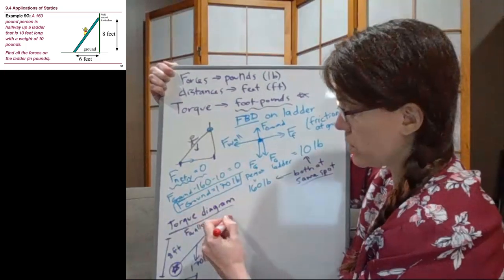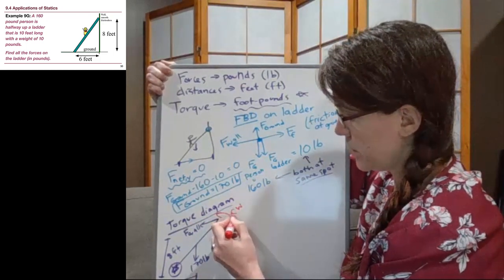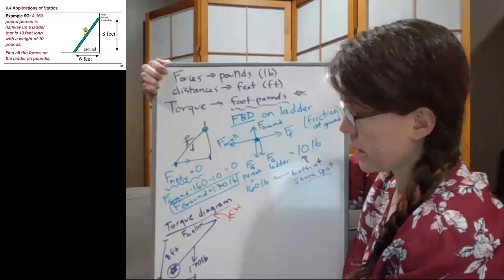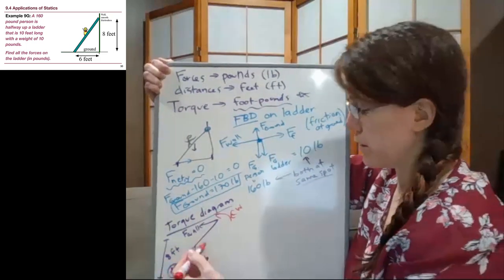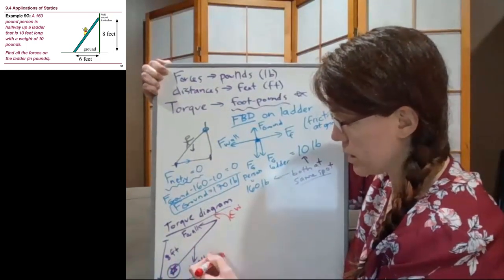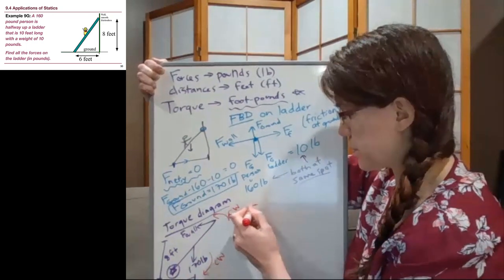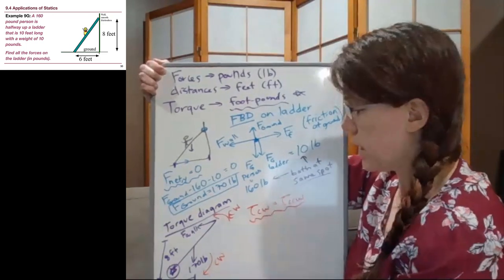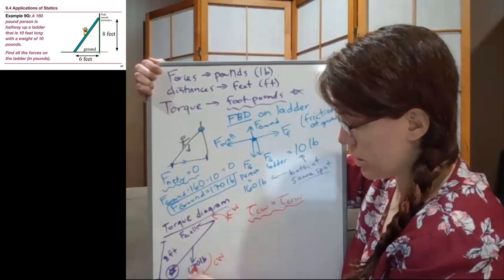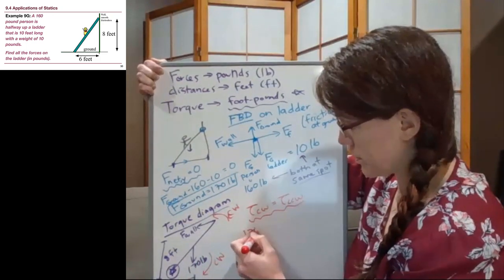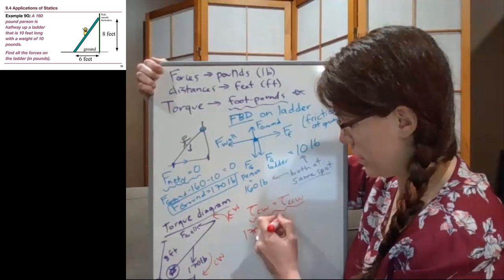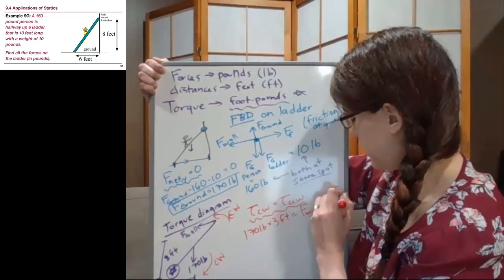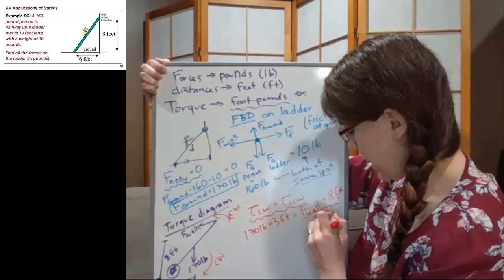For the torques, if somehow the wall were able to push extra, it would cause that ladder to go in a counterclockwise direction as it swings away from the wall. If the wall suddenly magically disappeared, this whole ladder would rotate clockwise, so that torque is clockwise. If we look at torques clockwise equals torques counterclockwise as usual, we get that the 170 pounds times 3 feet equals the unknown force from the wall times 8 feet. We divide both sides by 8 feet, and we get 170 times 3 divided by 8, so we get 63.75.